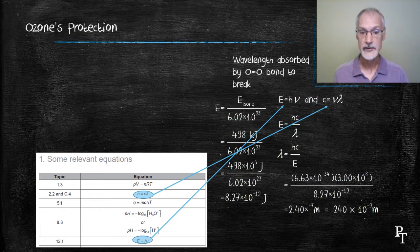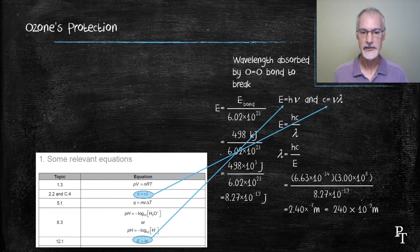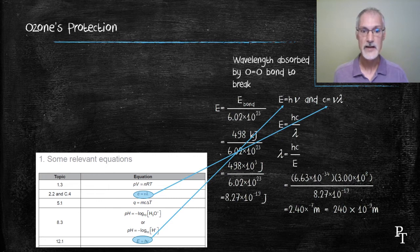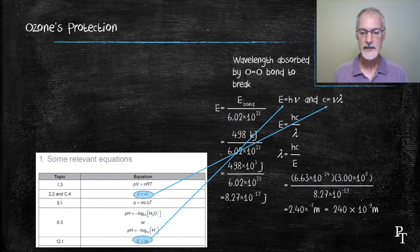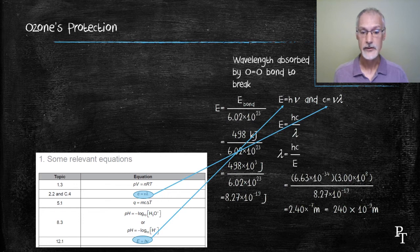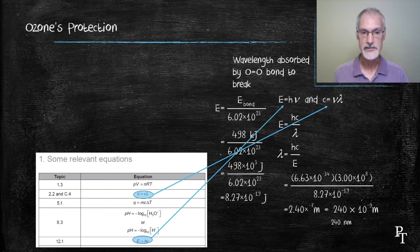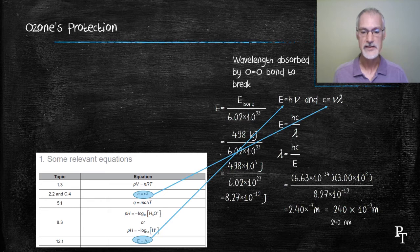Now substituting in my values, H, Planck's constant, never changes, 6.63 times 10 to the minus 34. C is the speed of our wave, which in this case is light, 3 times 10 to the eighth meters per second. Again, a value that doesn't change and is also in your IB data book. Divided now by the energy that I require to break that bond. That gives me that the wavelength of light I require is 2.4 times 10 to the minus 7 meters, or 240 nanometers, nano standing for 10 to the minus 9.